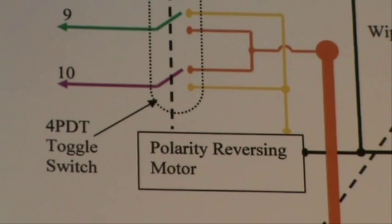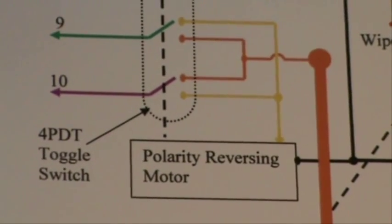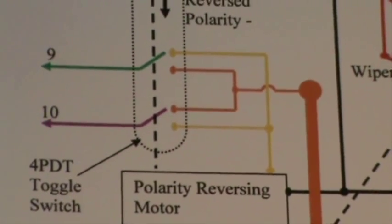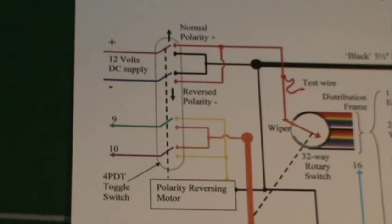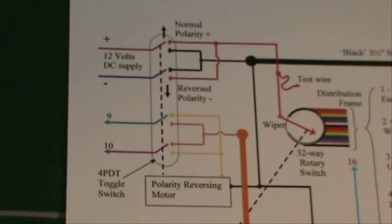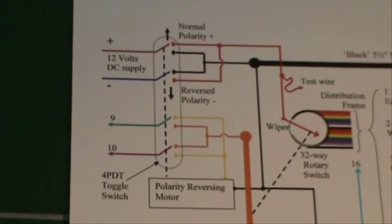So, to change the direction in which any of the motors will run, we use a four-pole double-throw toggle switch moved by the polarity reversing motor. This operates four sets of changeover contacts and changes between normal polarity or reverse polarity.